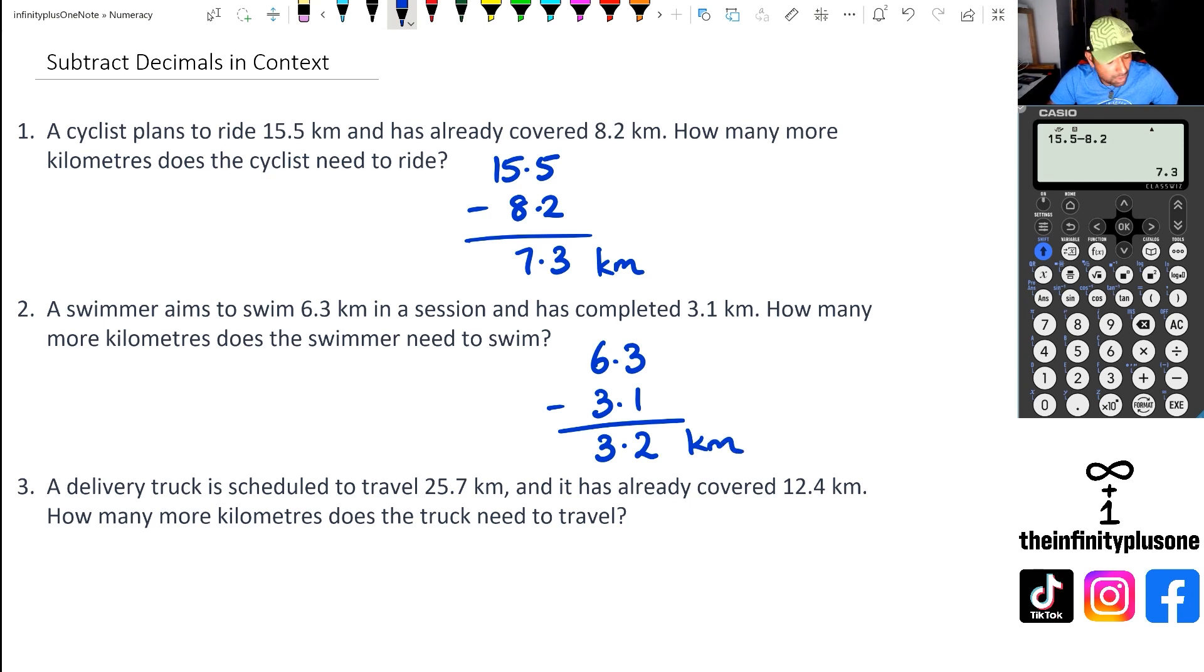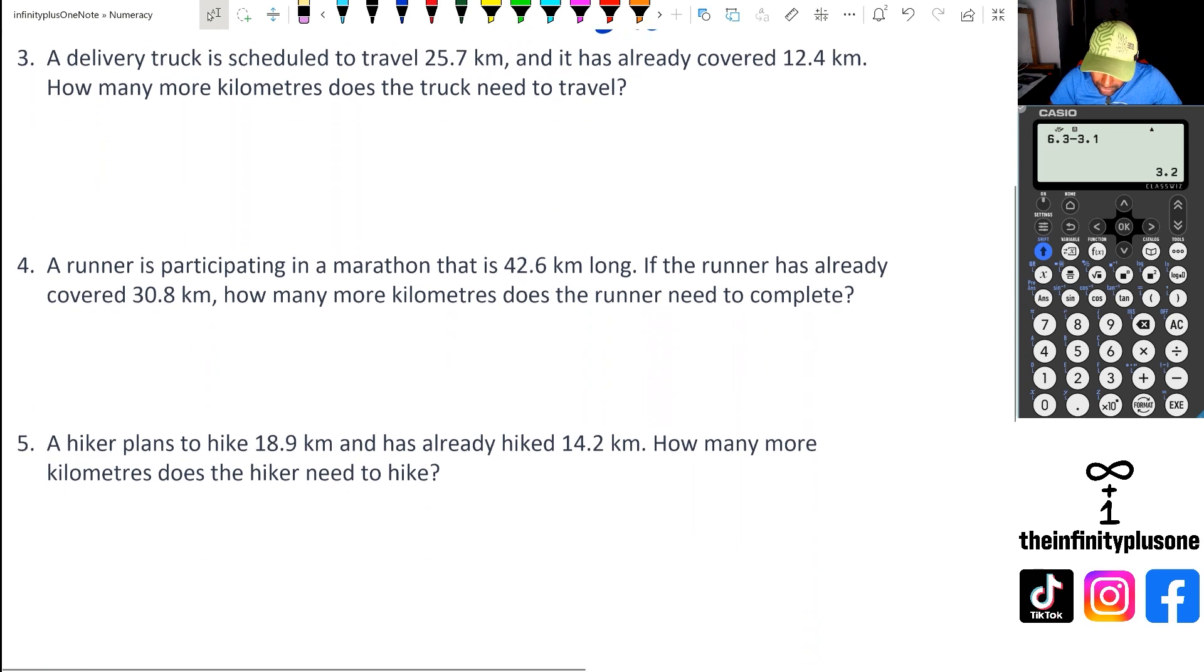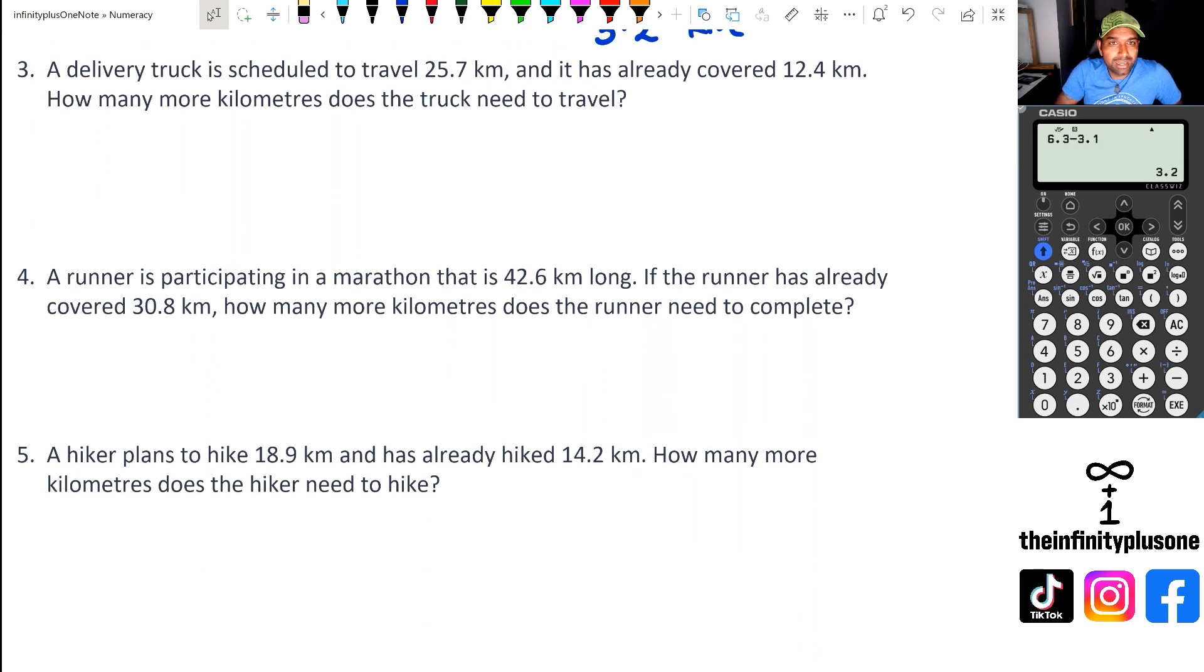So doing it on the calculator, we've got 6.3 take away 3.1 and that's 3.2. As always, I will give you folks some time to try and do these three questions and then we'll actually go through the answers. Hopefully you've had a chance to pause that video and try these questions. But anyway, let's go to question three.